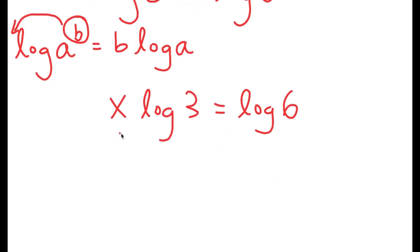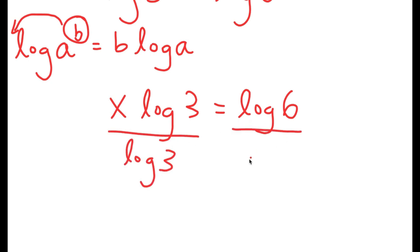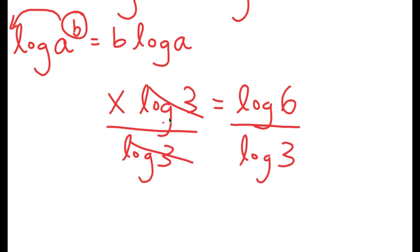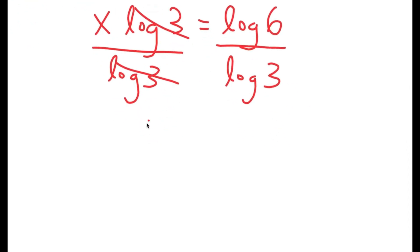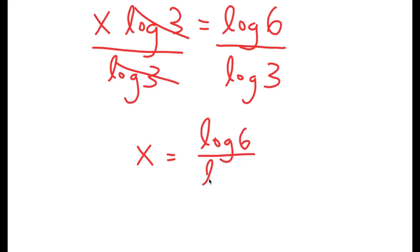Now I'm going to divide both sides by log 3, because again, we want to isolate x. By doing this, these two cancel out, and I get x is equal to log 6 over log 3.